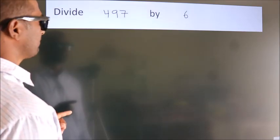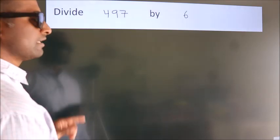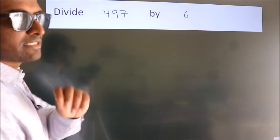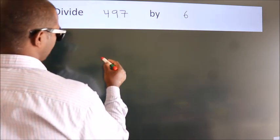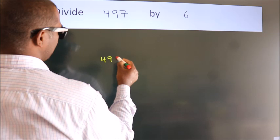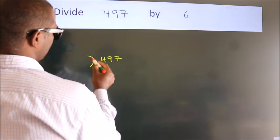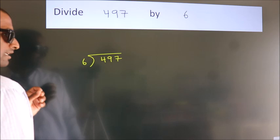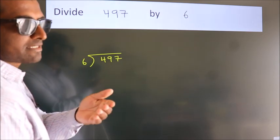Divide 497 by 6. To do this division, we should frame it in this way: 497 here, 6 here. This is your step 1. Next.